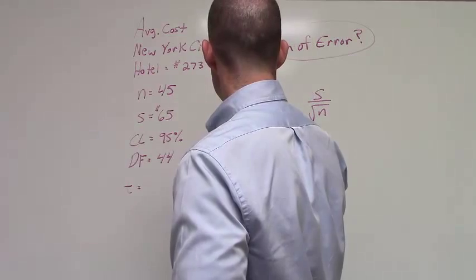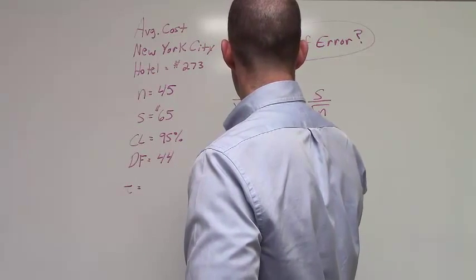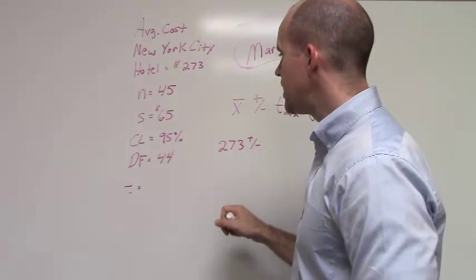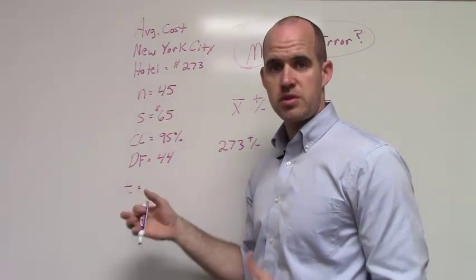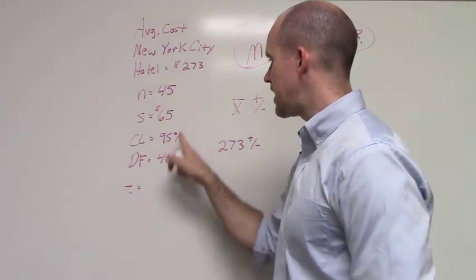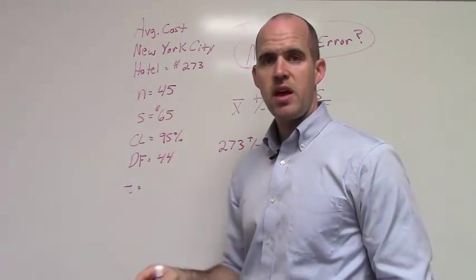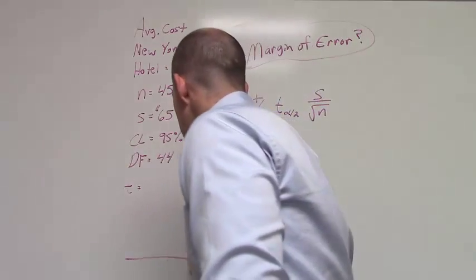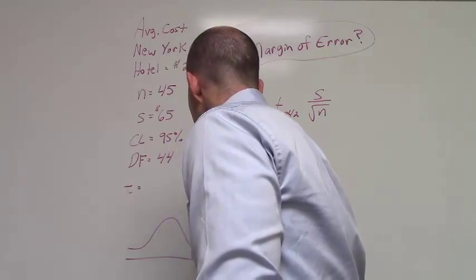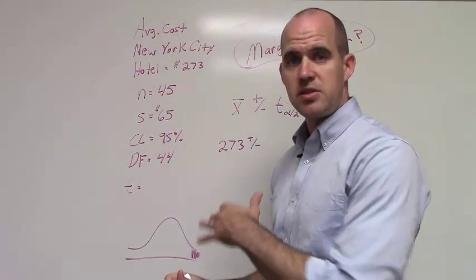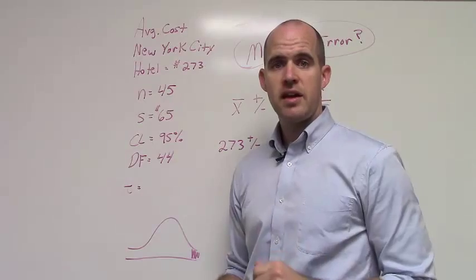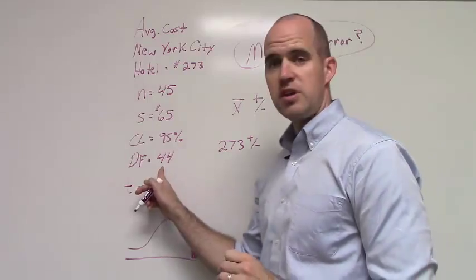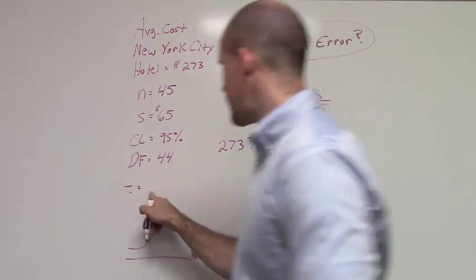So, we know that this is 273 plus or minus. Now, what do we do with this T alpha divided by 2? Well, recall that we need to know our degrees of freedom, which is simply N minus 1. So, that is 45 minus 1, which is 44. And if you go to a T distribution table, and you're looking in the upper right-hand corner of the bell curve, right up there. So, divided by 2, that's 0.025. And so, if you look under the column of 0.025 at degrees of freedom of 44, you'll get a T value of 2.015.